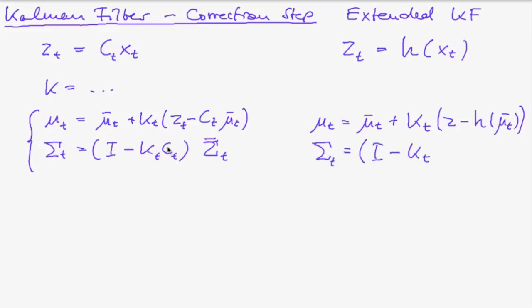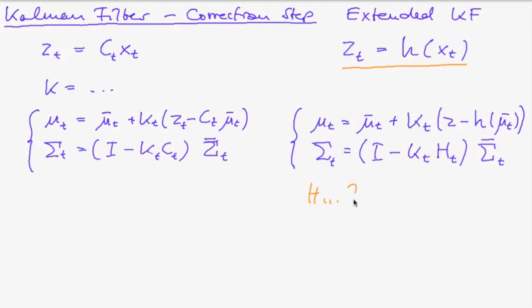For the covariance matrix, the structure is the same. However, instead of matrix c, we multiply by the Jacobian of the measurement function, then multiply with the predicted covariance matrix. The differences are: first, the measurement equation now uses a possibly nonlinear function h; and all occurrences of c are replaced by H, where H is the Jacobian of function h — all partial derivatives of h with respect to the state.